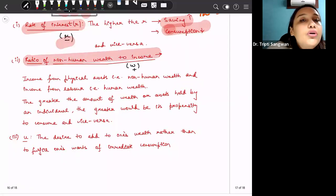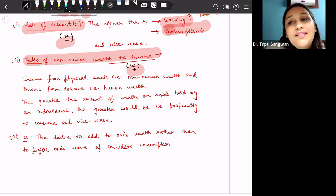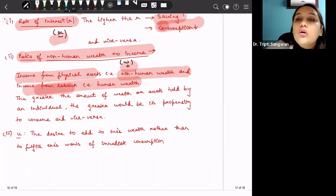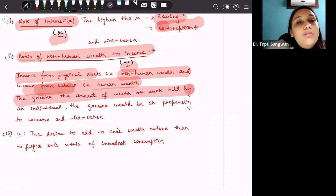Next factor is ratio of non-human wealth to income. That is why we have written here positive symbol. That is, the relationship between the consumption in current time period and the non-human wealth is positive. Greater the wealth that a consumer holds, not his income - income is what we earn from working, wages, salary we generate. Wealth is assets, accumulated assets from which we get rent, such type of assets. So income from physical assets, that is non-human wealth. And income from labor, that is human wealth. So the greater the amount of wealth or assets held by an individual, the greater would be its propensity to consume and vice versa.